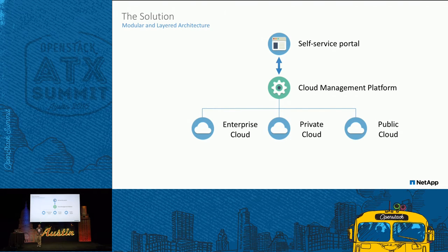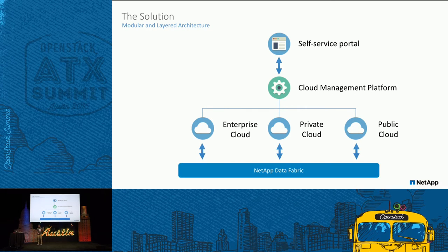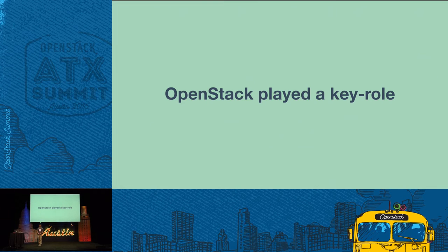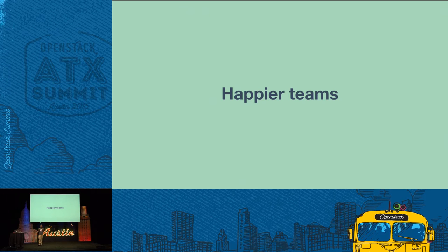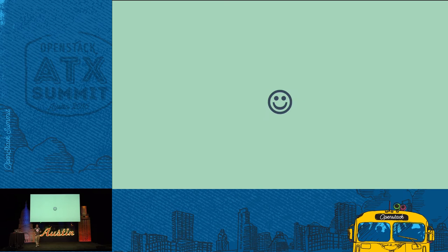Next we have our enterprise, private, and public clouds, all augmented by NetApp storage. At the bottom, the NetApp data fabric is what allows us to stay in control of our data. It gives us the flexibility to move data around without having to worry about paying Amazon or Azure a big sum of money. OpenStack played a key role in our solution — it helped us keep our costs low, gave us the control and flexibility we needed, helped make our teams happier, and we saved a lot of time and money.